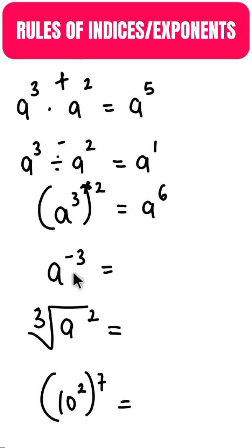When you have indices with a negative power, all you have to do is to make it an inverse so that it will become positive. So this will be equal to 1 over a raised to power 3.